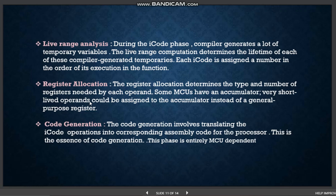Register allocation determines the type and number of registers needed by each operand. In most MCUs, only a few registers can be used for indirect addressing. Some MCUs have an accumulator, so very short-lived operands could be assigned to the accumulator instead of a general-purpose register. There are two parts to register allocation: the first is register packing, where MCU-specific expression folding reduces register pressure; the second is more MCU-independent and deals with allocating registers to remaining live ranges. Finally, code generation involves translating the i-code operands into corresponding assembly code — this phase is entirely MCU-dependent.